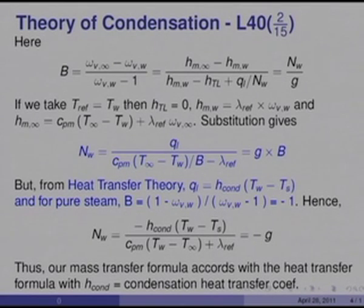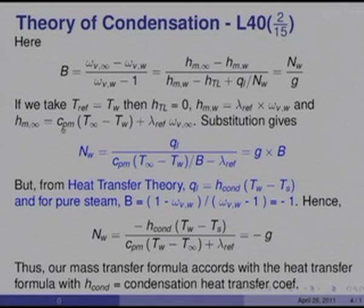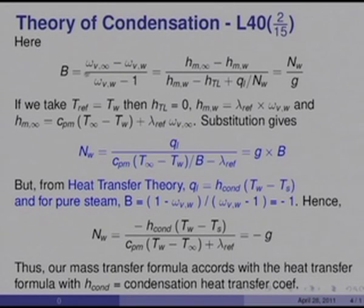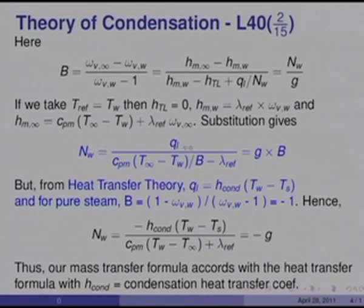Taking T_ref equal to T_w, h_tl will be 0 and h_mw will be λ_ref · ω_Vw. There will be no sensible heat contribution to h_mw because T_ref equals T_w. However, h_m∞ equals C_pm (the mixture specific heat) multiplied by (T∞ − T_w) plus λ_ref · ω_V∞. Substituting for h_m∞ and h_mw, and using n_w = G·B, we find that n_w can be written as q_l divided by [C_pm(T∞ − T_w)/B − λ_ref], equal to G·B.